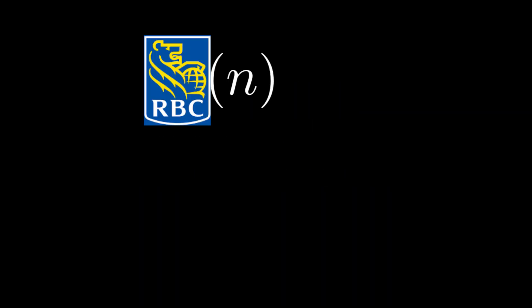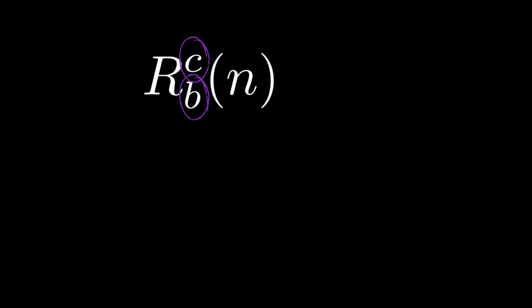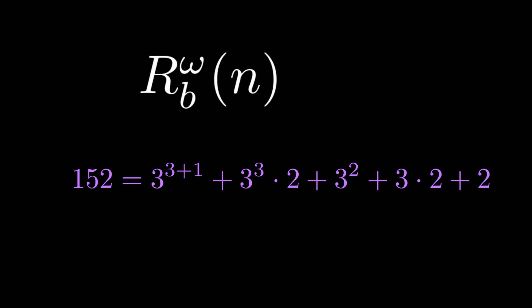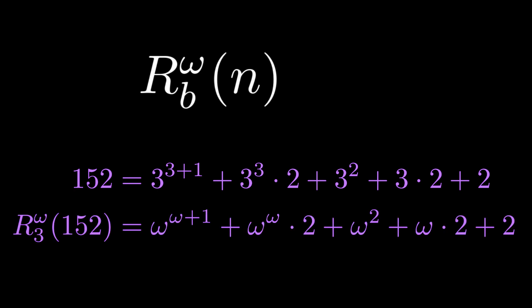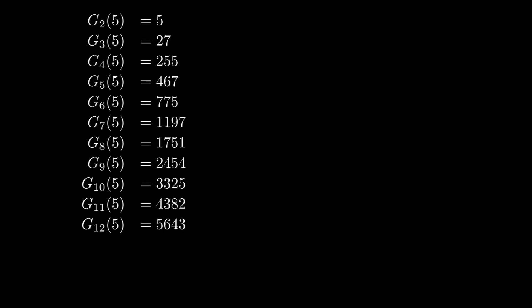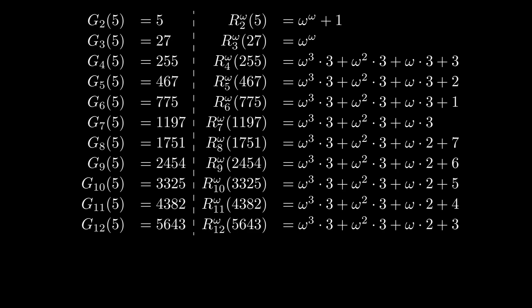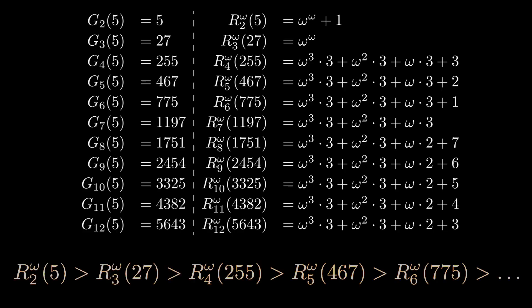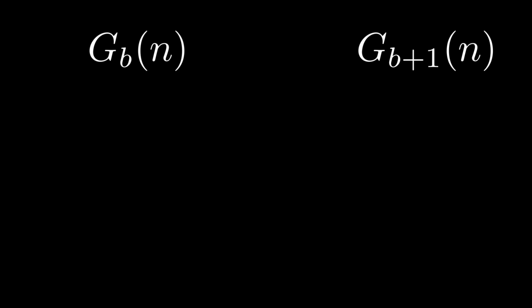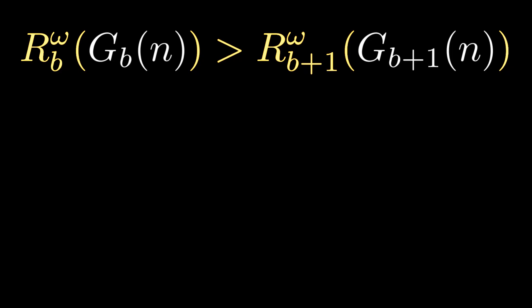If we revisit our notation R_BC from earlier, there's no reason to restrict b, c, or n to be finite numbers. In particular, we can use R_b_omega to take a pure base b expansion of n and replace every b with the infinite ordinal omega. This can be a way of abstractly describing the shape of this expansion. For example, if we revisit the Goodstein sequence generated by 5, we can extract the general shape of each term. Moreover, this sequence of infinite ordinals we get is genuinely decreasing, despite the Goodstein sequence it comes from seeming to increase. So why do these ordinals decrease?